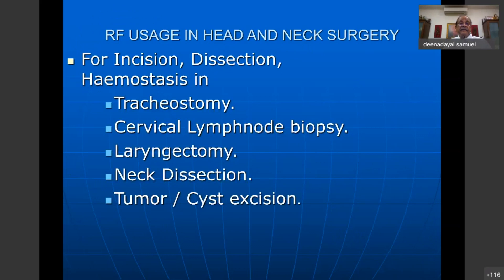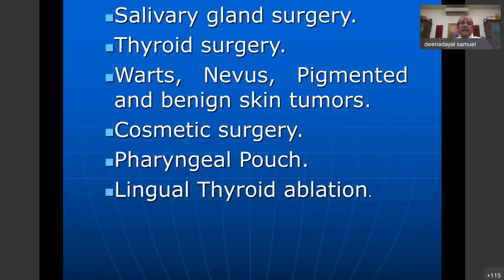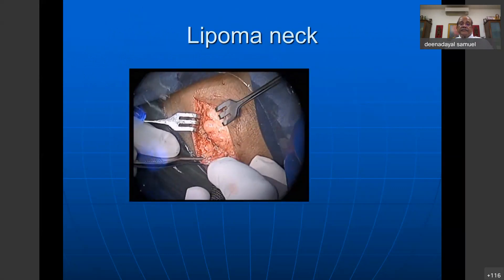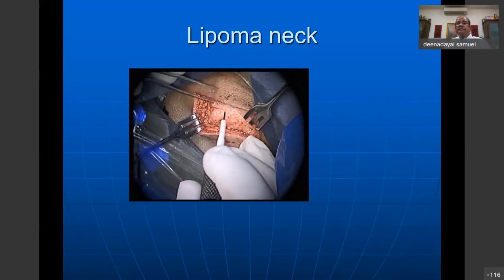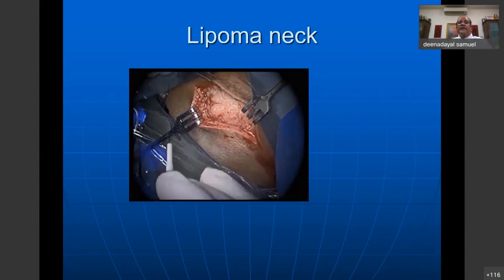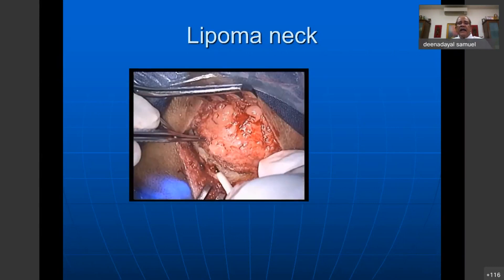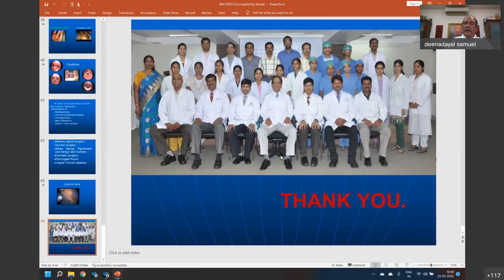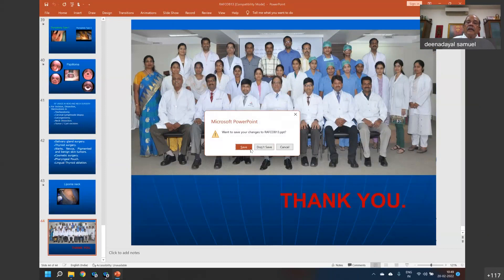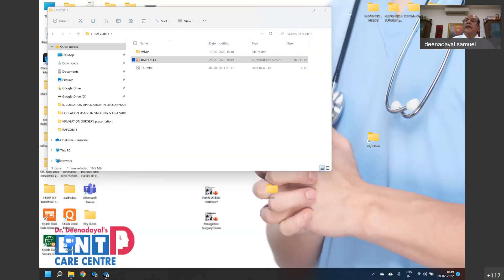Radio frequency can be used in head and neck: tracheostomy, cervical lymph node biopsies, laryngectomies — everything. Most neck work uses radio frequency rather than diathermy, and the healing is excellent because of the low temperatures with very good control. A little introduction to radio frequency: we should know how an electrosurgical unit works. Heat is generated at the tip — slow for coagulation and shrinkage, fast for cutting. There are always two modes: unipolar and bipolar.